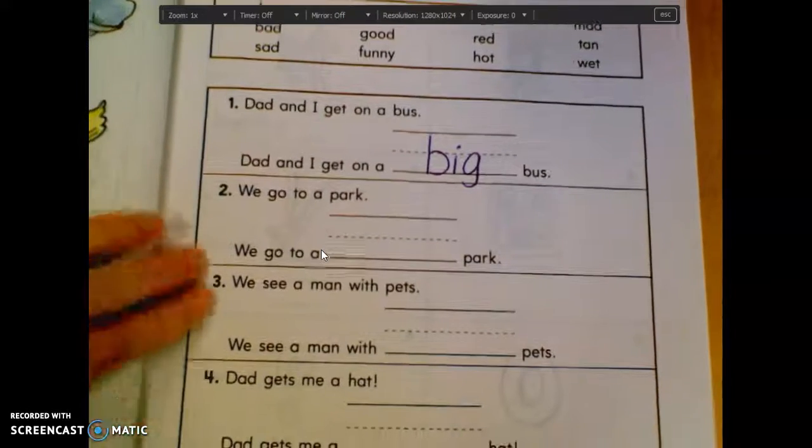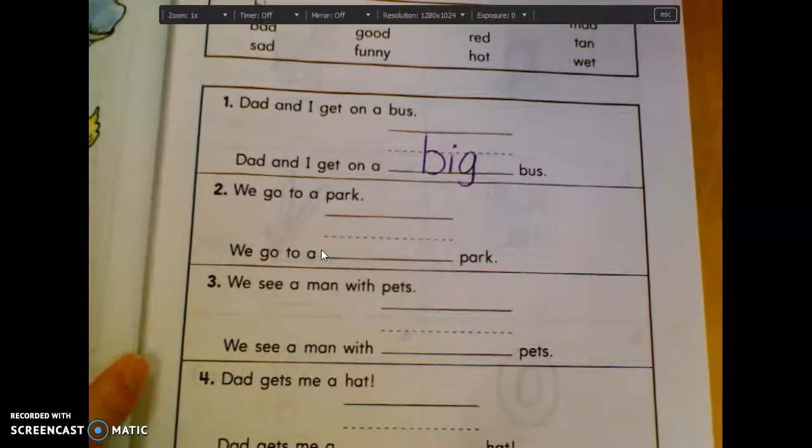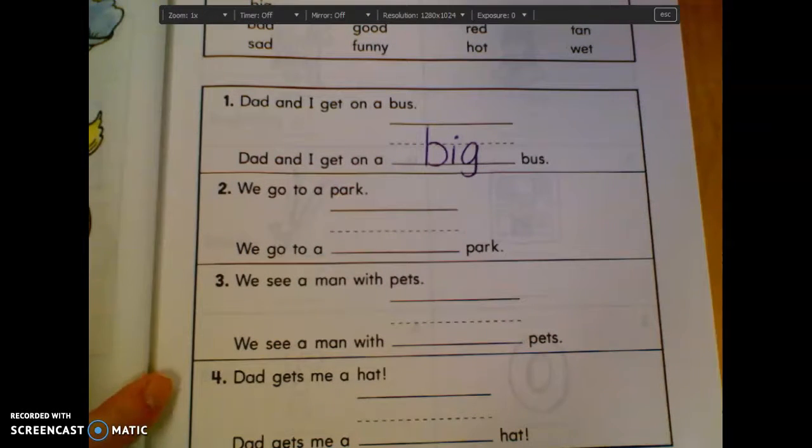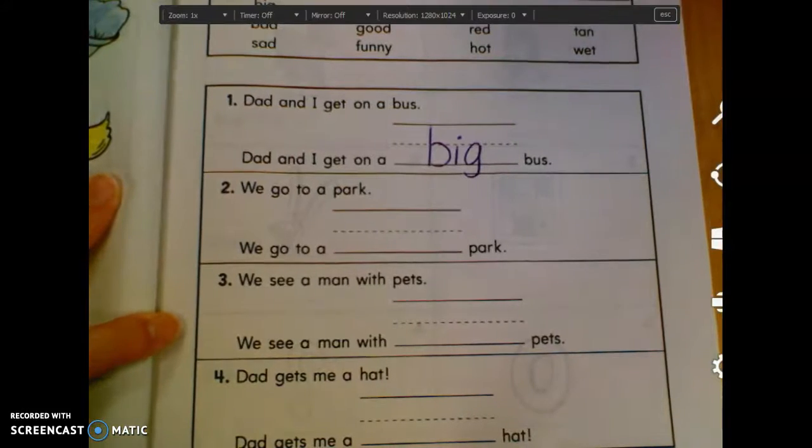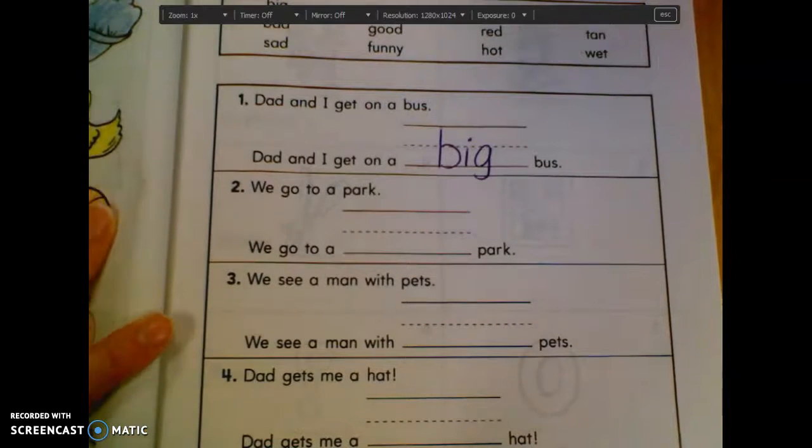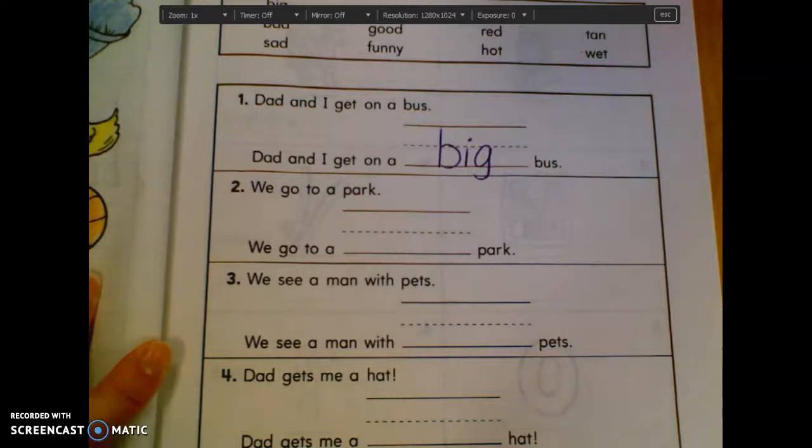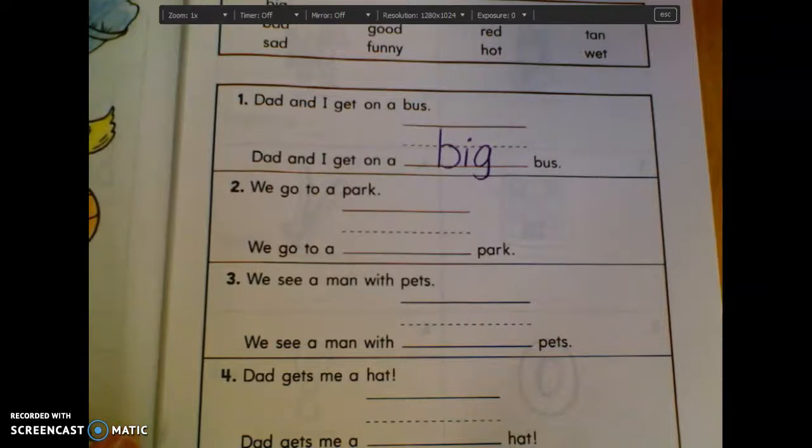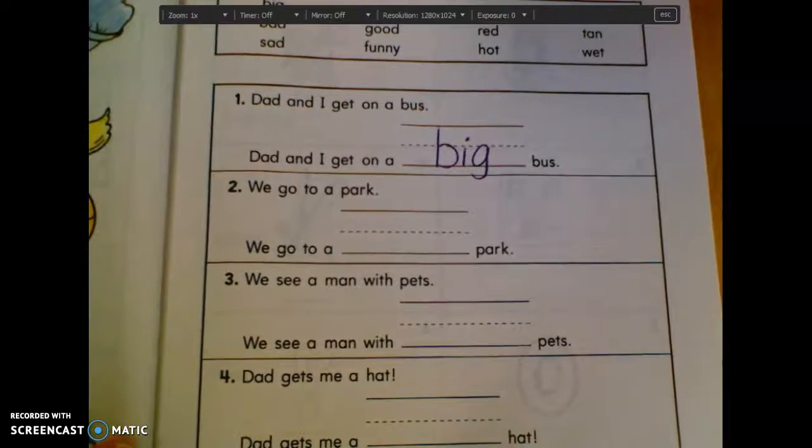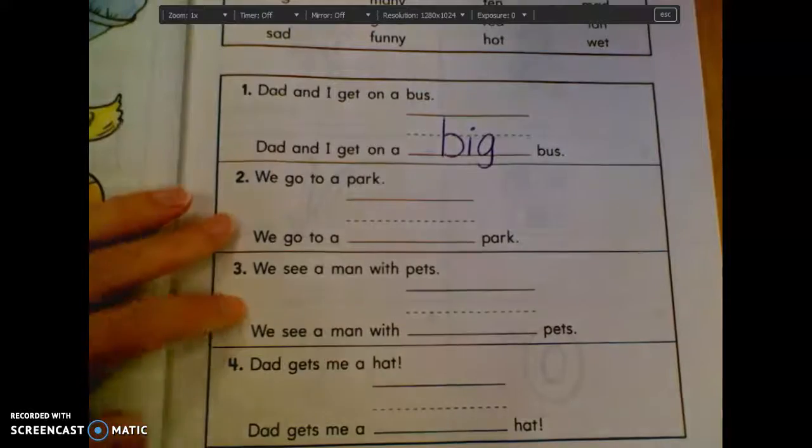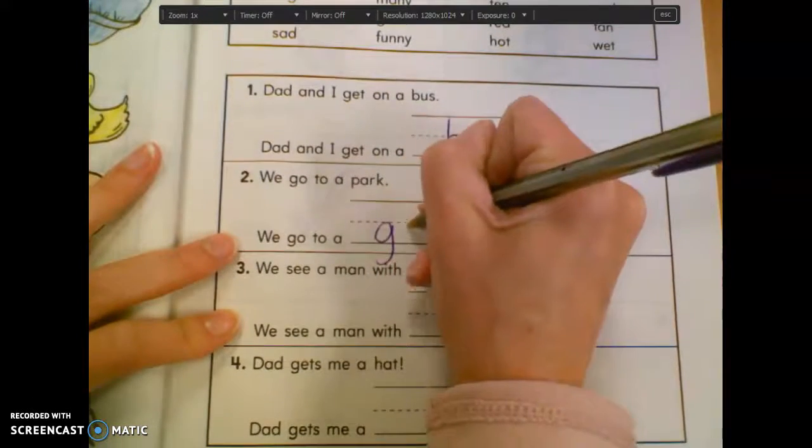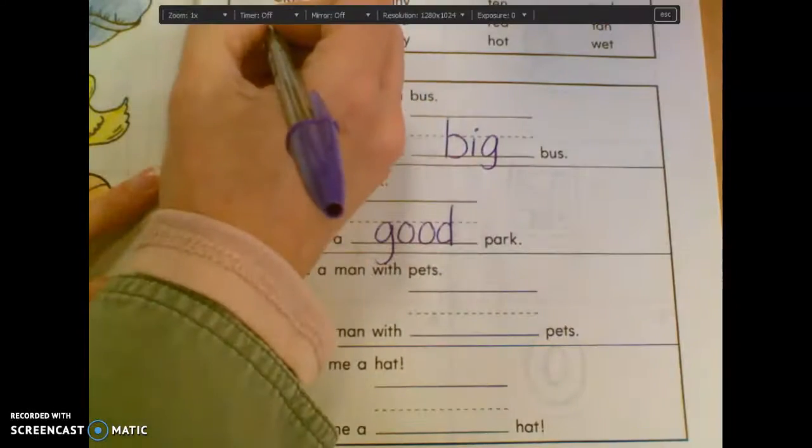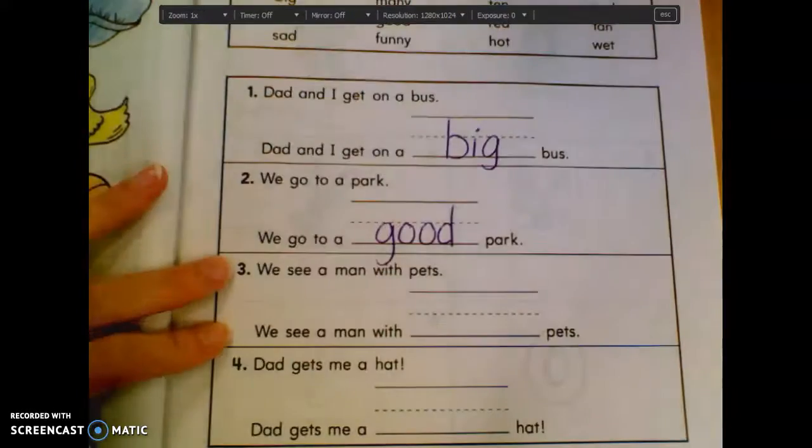Number two. We go to a park. We go to a blank park. What's a word that we could use to describe the park? Try to make it make sense. What do you think? Taylor? A wet park. No. Try to do a different. Yeah, but they're never called wet parks. I've never heard of one called a wet park. Owen, what about you? A good park. Yeah, that describes a good park. We go to a good park. But fun's not up here. Funny is. But a park can't be funny.